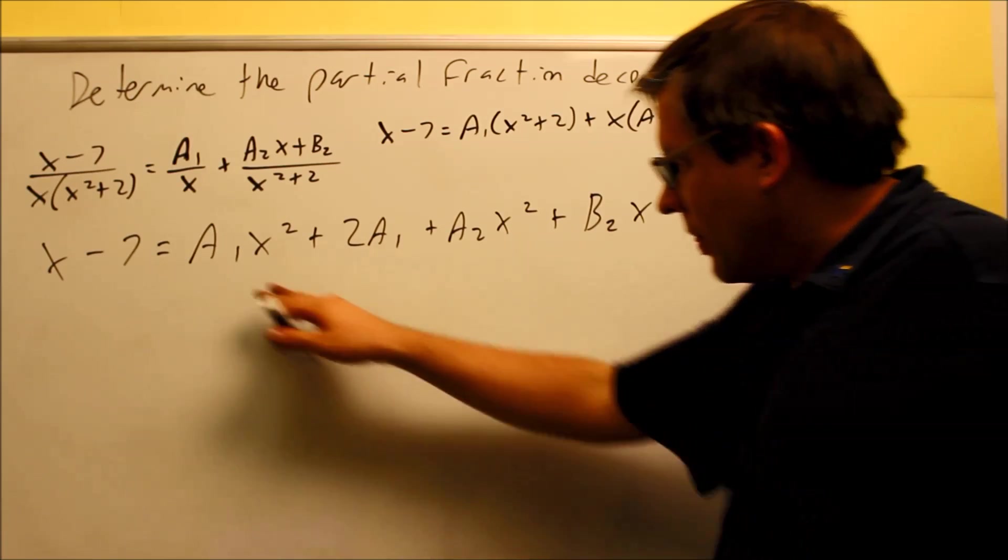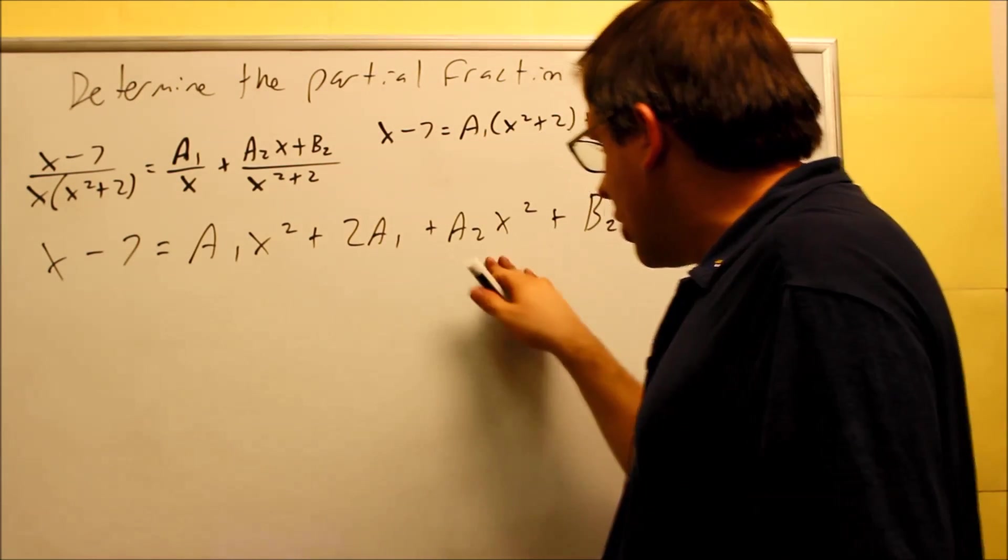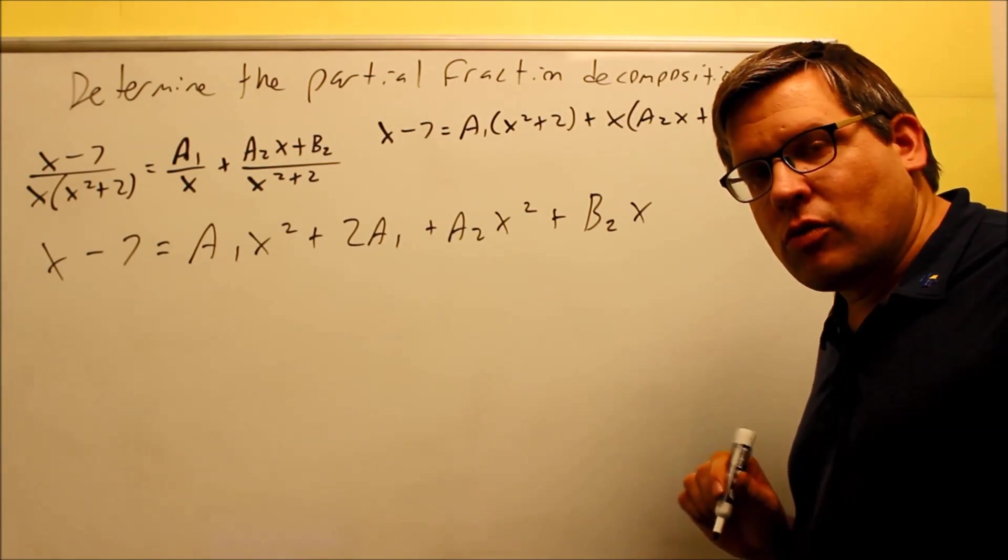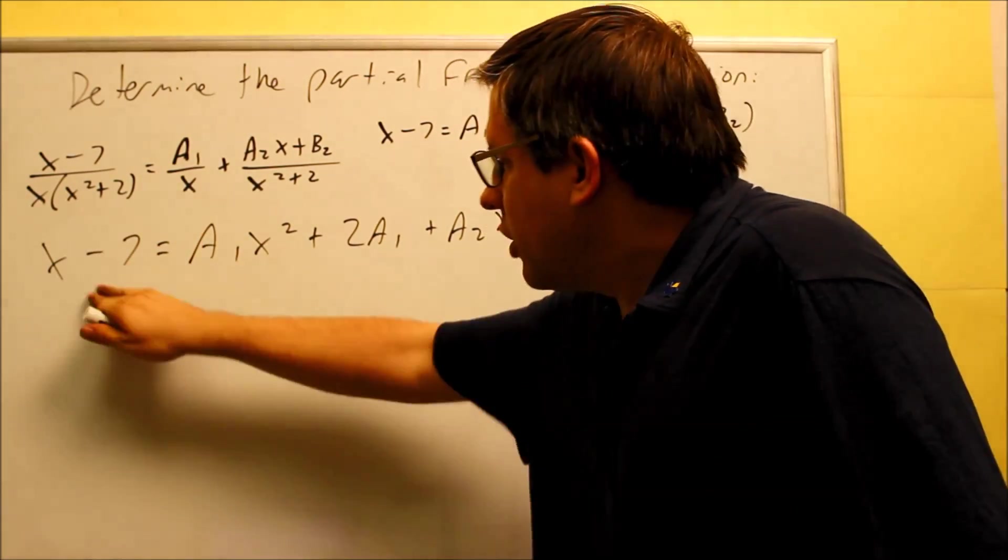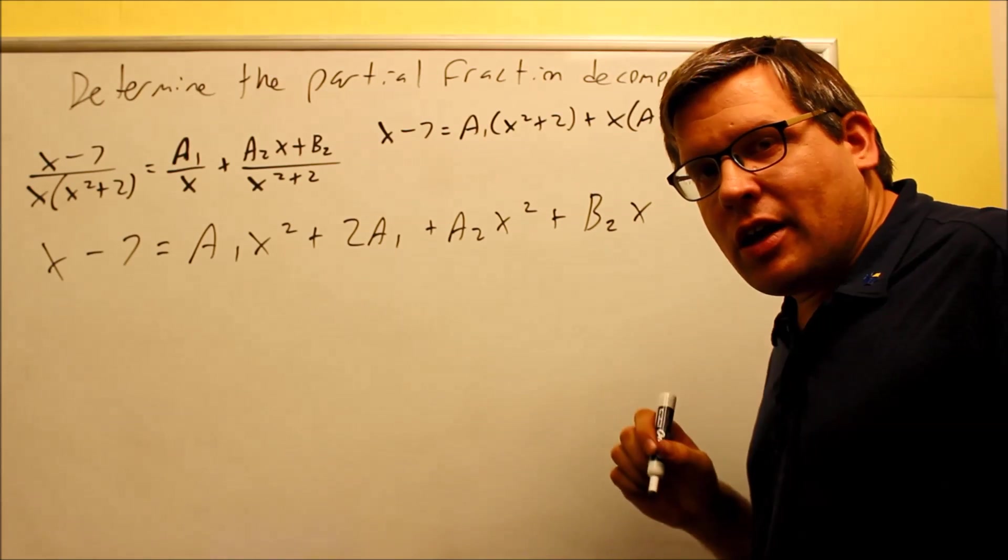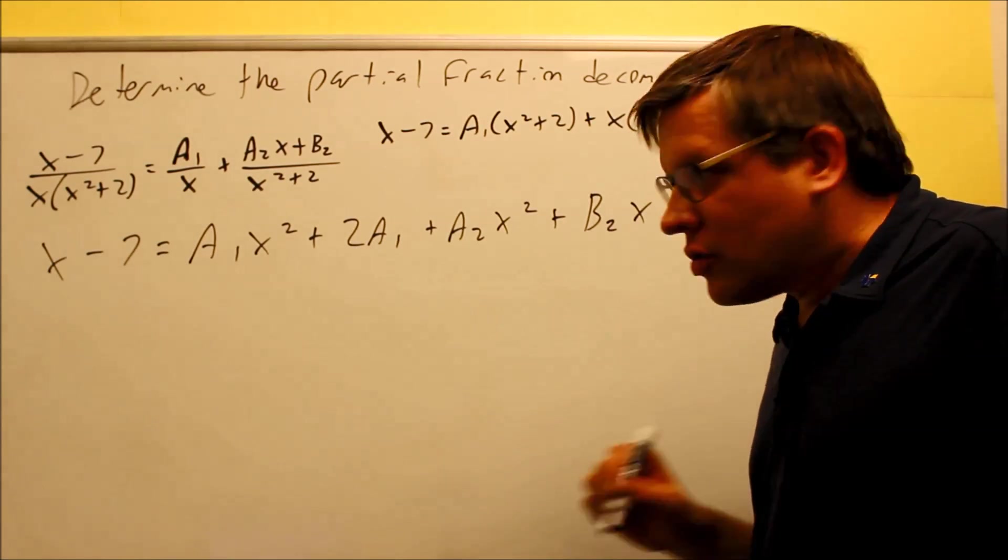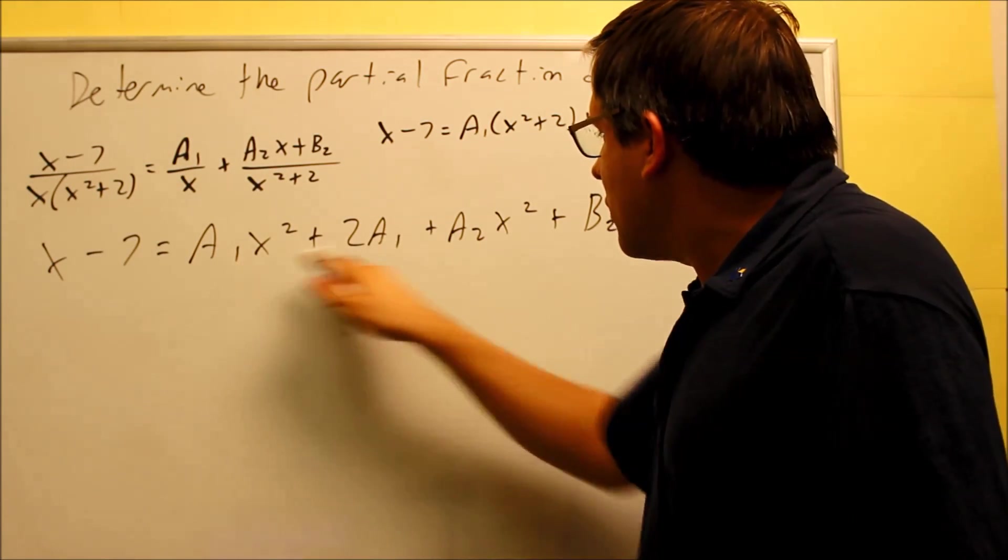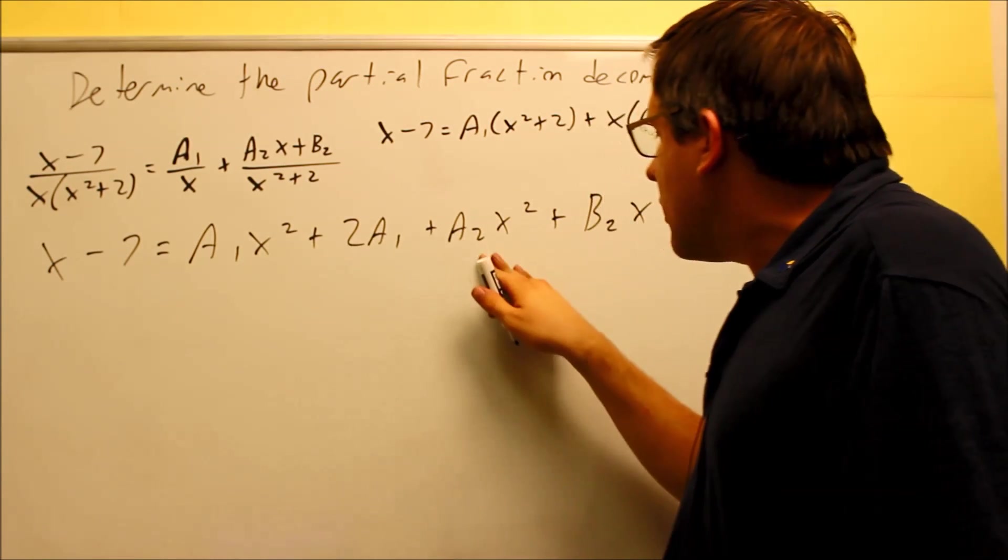So the question is, if I have the square terms, what do I match it up with over on the left hand side? Well, technically there is one, we just don't see it. We can write that as 0x squared. So technically there is a 0x squared out here in that problem. So, if I take these two coefficients, the a1 and the a2, basically I can do a1 plus a2. All that is going to be times x squared right here.